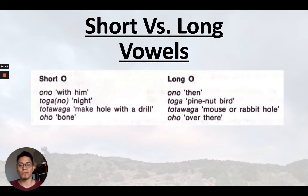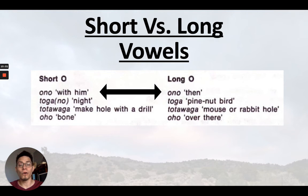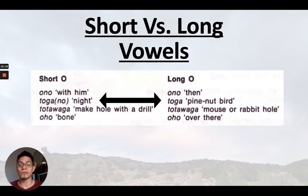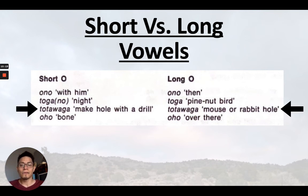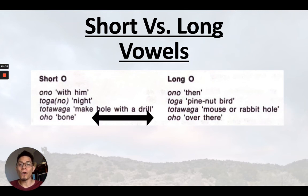So you just have to know the word. The short O — the word for 'with him' is 'ono' versus the long O 'ono.' Hear the difference. Next example: 'toga' means night, versus 'toga' meaning pineapple bird. Third example: 'totawaga' with a short O versus 'totawaga' with a long O — hear the difference. Finally, the word for bone: short 'ojo' versus 'ojo,' which means over there. The only way you'll know which word it should be — short or lengthened — is the context when you're reading.